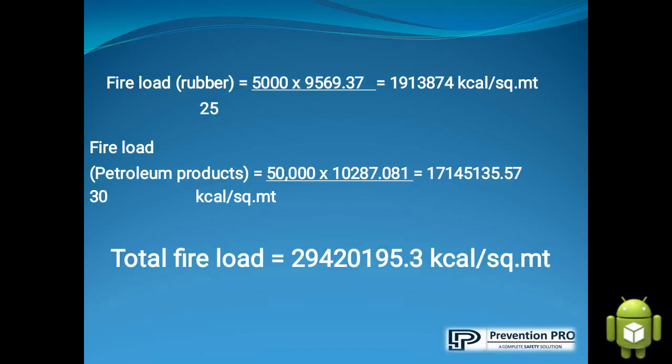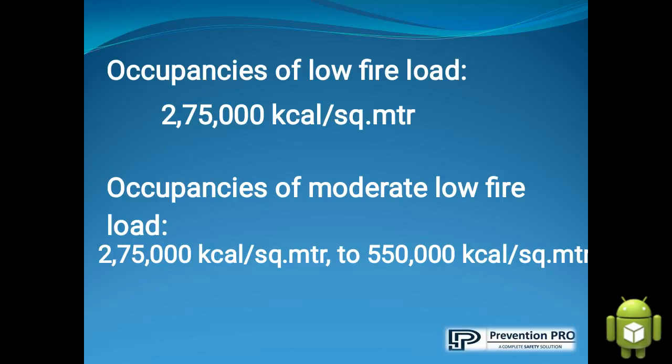So, altogether, by summing up the results of each material, we are getting the total fire load of about 2,94,20,195.3 kilocalories per square meter. Now we are going to see the occupancy of fire load, which is about 2,75,000 kilocalories per square meter.